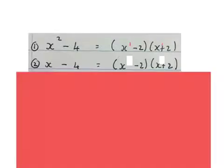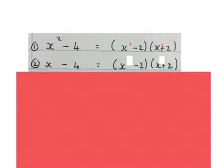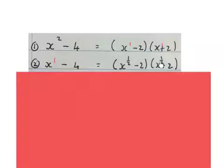The same way we can now factorize this binomial. We still write two brackets. We put the minus 2 and the plus 2 at the back. Then we put an x in the beginning, but we need something in the air so that if I add them, I must get back to a 1 in the air. That will be x to the half times x to the half, which gets us back to x to the power of 1. Please stop the video and get your brain around that.